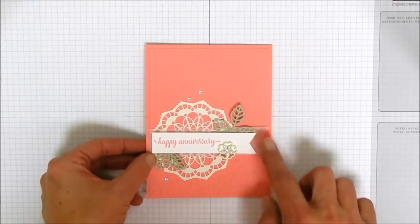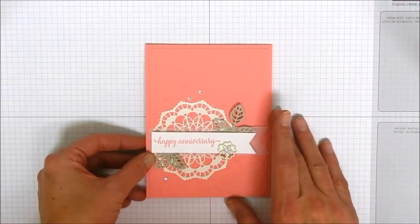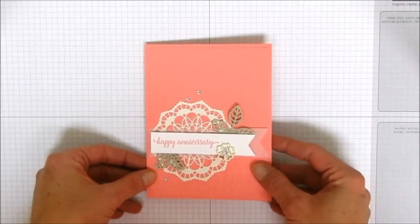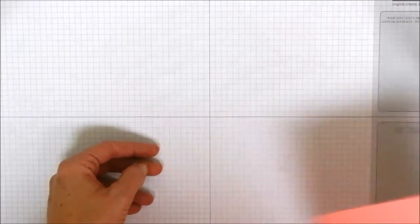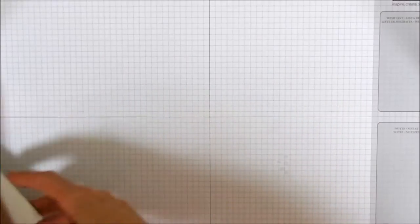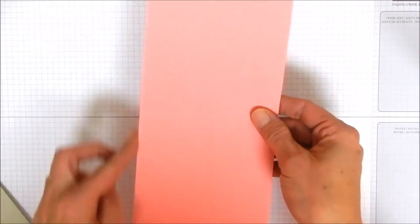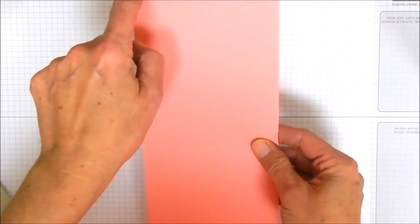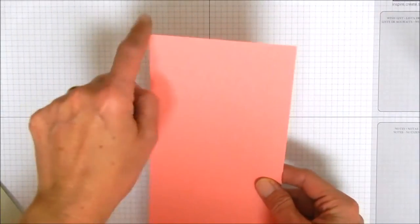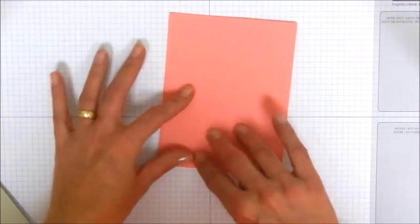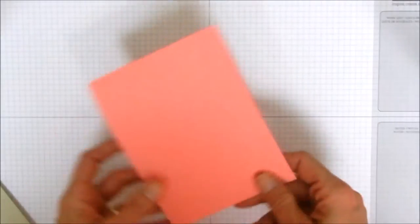And so it uses a couple of new items from our occasions catalog and we'll kind of go over what we need to put the card together. So we are going to have a top folding card base in flirty flamingo. So this is cut 11 by four and a quarter, and then I've scored it down the center at five and a half inches and we'll just go ahead and fold that over.